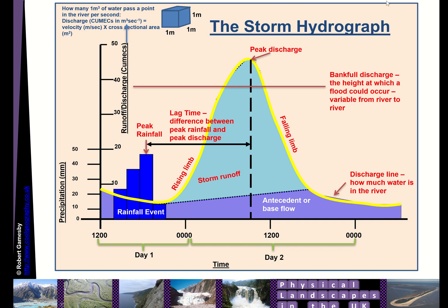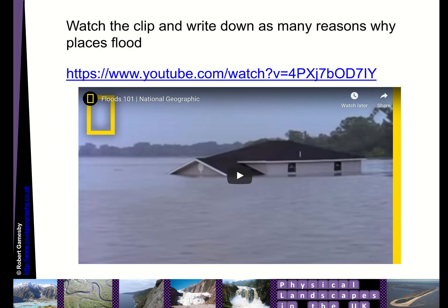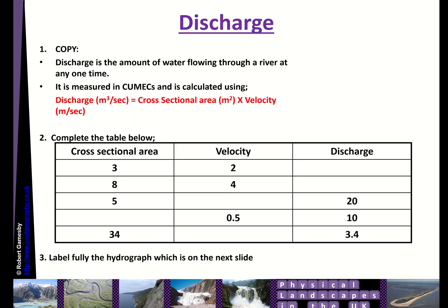This video recording is all about the storm hydrograph, so we're going to take a look at this graph here during this lesson for the next hour, and then you can answer some questions on it. The first thing you'll do is take a look at a National Geographic video. Try to write down as many reasons why places flood. It is based on the United States, but a lot of the concepts are relevant to the United Kingdom.